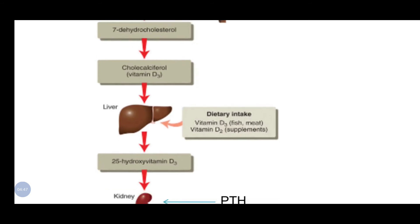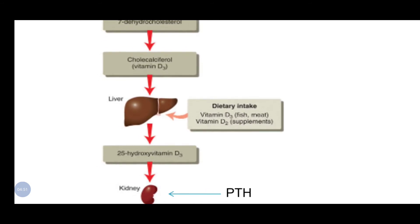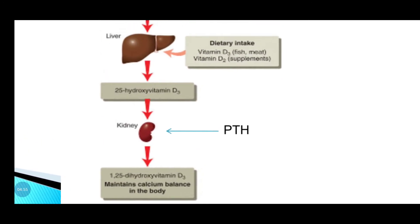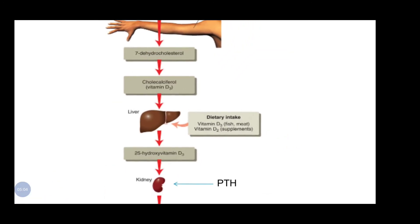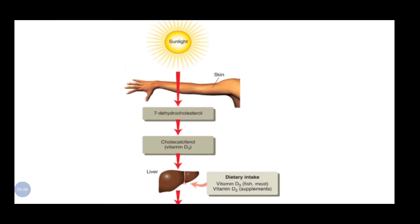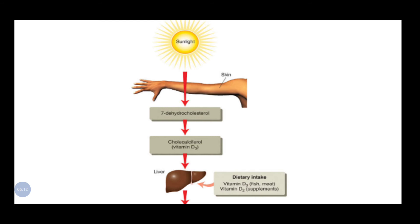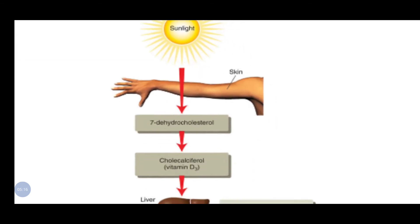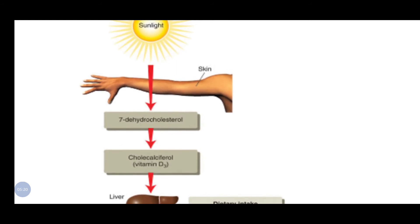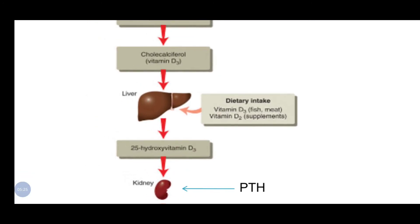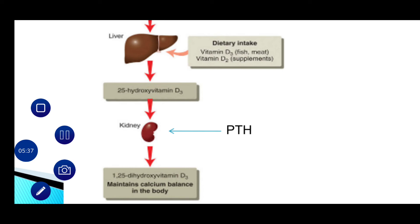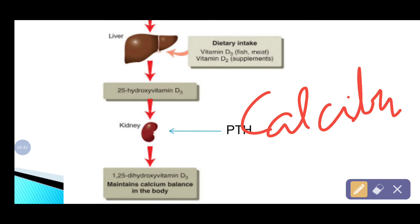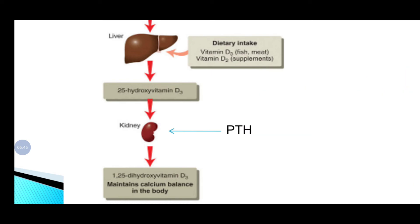Cholecalciferol is then converted into 25-hydroxy vitamin D3 in the liver. This is further converted into 1,25-dihydroxy vitamin D3, which is the active form, in the kidney. This active form is known as calcitriol. So to summarize: cholecalciferol is formed in the skin from UV rays, then 25-hydroxy D3 is formed in the liver, and the active form calcitriol is formed in the kidney.